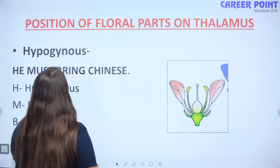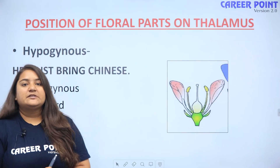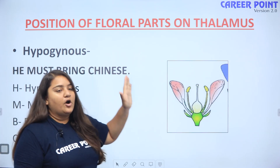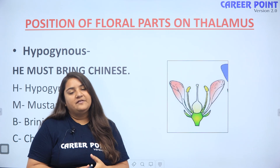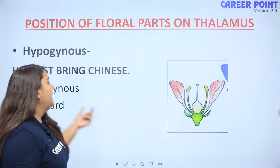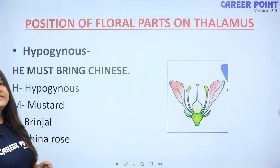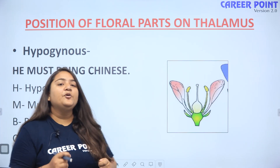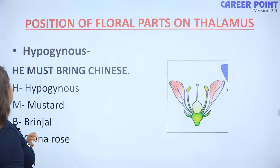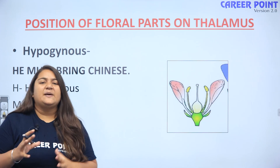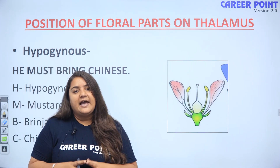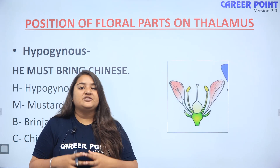Let us start our today's session. First, we are going to discuss the details of the thalamus and the position of the floral parts on the thalamus. First we have hypogynous. What is the trick for hypogynous? Everyone likes to eat Chinese, so its simple trick is 'he must bring Chinese.'